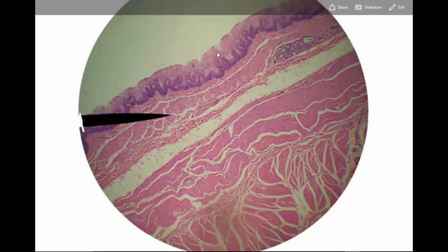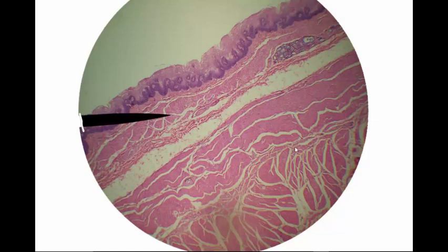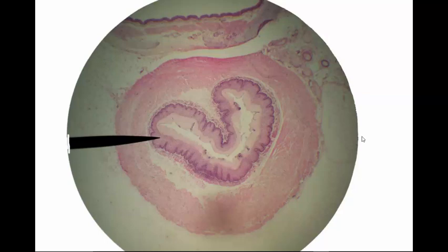How about, what is this layer up here? That is mucosa. And what layer is down here? That again is muscularis. How about this slide? Name the organ at the pointer. And the answer to that is esophagus. If you said esophagus, you got it right. Good job.